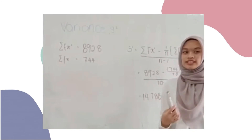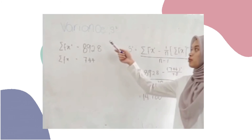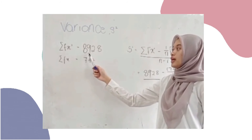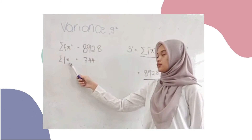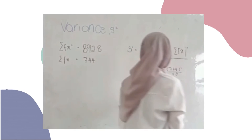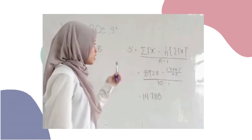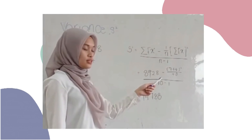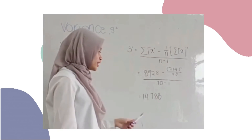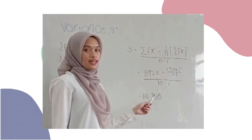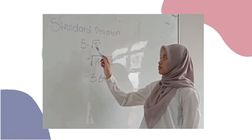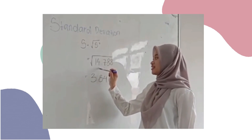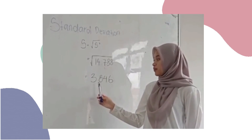Next, I will find the standard deviation. First, we find the variance S squared. From the data, we get the sum of x squared, and the sum of x is 744 with N equal to 70. Substituting into the formula — sum of x squared minus 744 squared divided by 70, all over 70 minus 1 — we get a variance of 14.74. The standard deviation S equals the square root of 14.74, which gives 3.846.